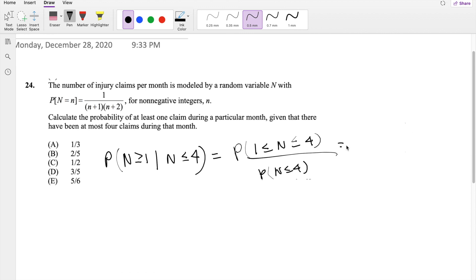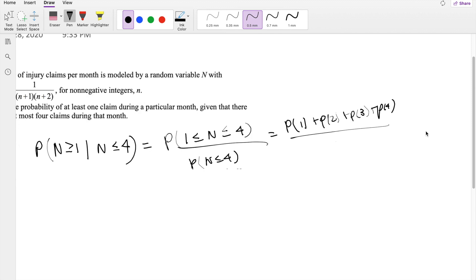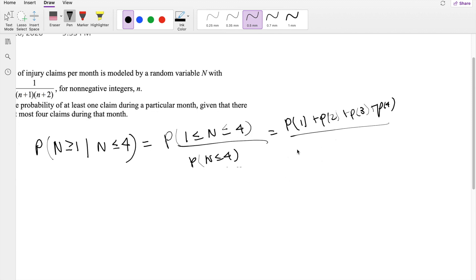So we know this is also equal to the probability that it is one plus probability that n equals two plus the probability that n equals three plus probability that n equals four, divided by the probability that n is less than four. So that's probability of 0 plus probability of 1 plus probability of 2, 3, and 4.